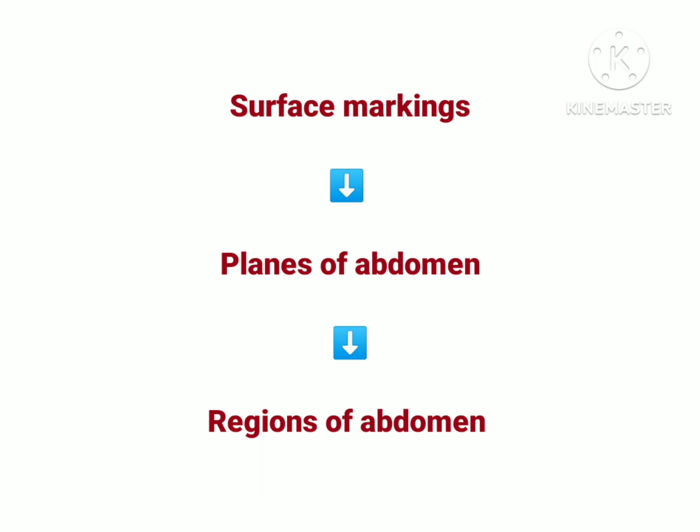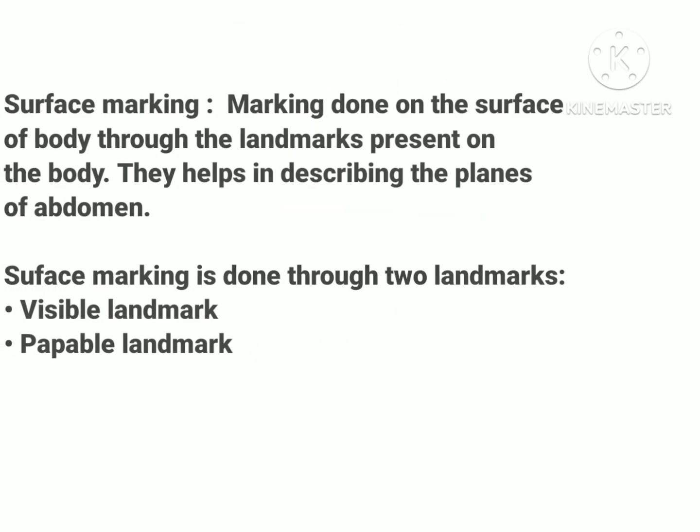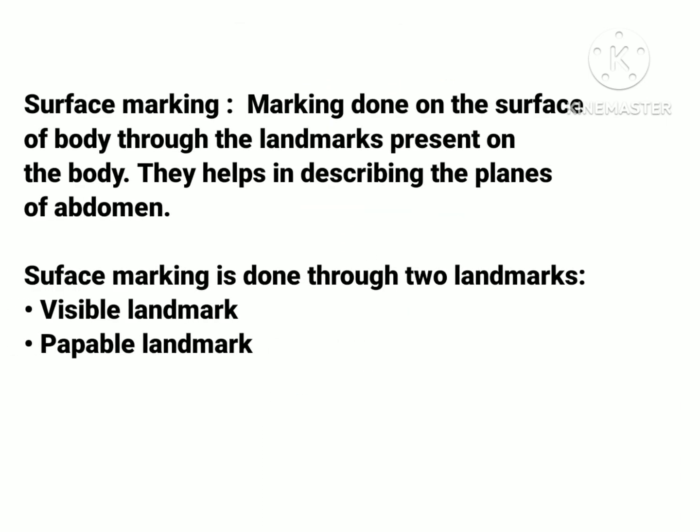So simply, the first thing we need to know is what is surface marking. Surface marking is marked by the surface of the body — by what kind of landmarks are present in the body. The surface marking helps us describe the planes of abdomen. Surface marking is made by two types of landmarks on the surface of the body.